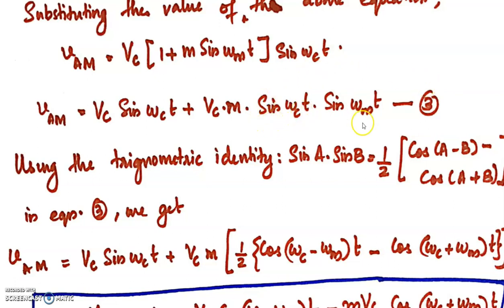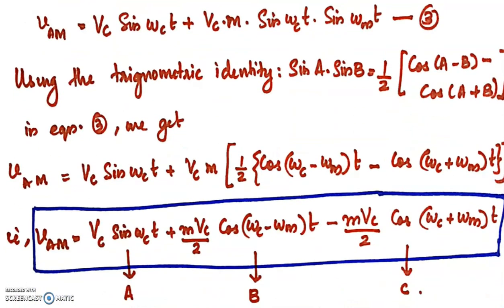For the product term sin(ωCt)·sin(ωMt), we apply the trigonometric identity sin A·sin B equals half times (cos(A−B) minus cos(A+B)). Applying this identity, equation 3 becomes VAM equals VC·sin(ωCt) plus VC·m times half times (cos(ωC−ωM)t minus cos(ωC+ωM)t).